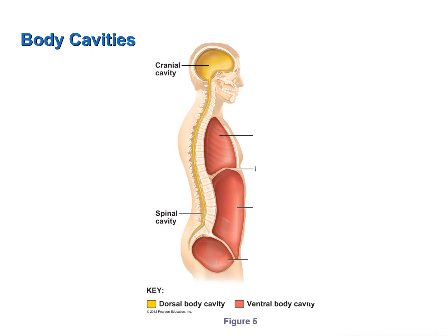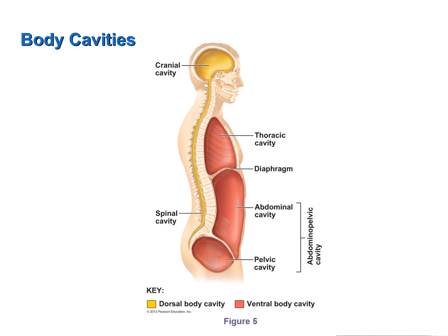On the anterior or ventral side of the body, we have the ventral body cavity, shown in red. It can be subdivided into the thoracic cavity, which is the space above the diaphragm, and the abdominal pelvic cavity, which is below the diaphragm. The abdominal pelvic cavity can be further subdivided into the abdominal cavity and the pelvic cavity. Note that while the diaphragm separates the thoracic from the abdominal cavity, there is no physical structure separating the abdominal cavity from the pelvic cavity.